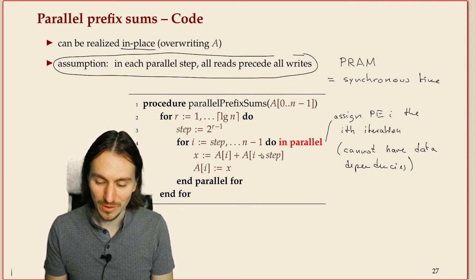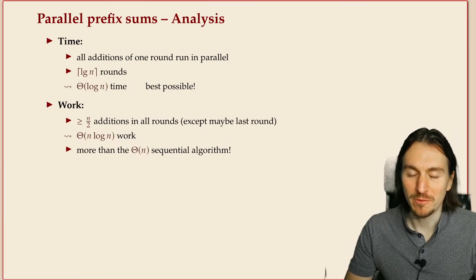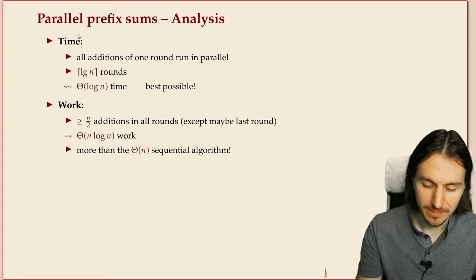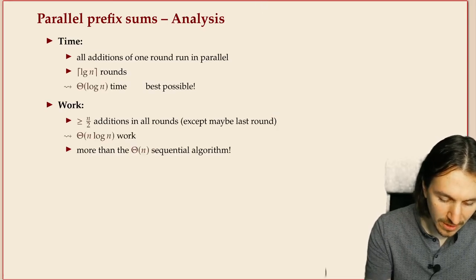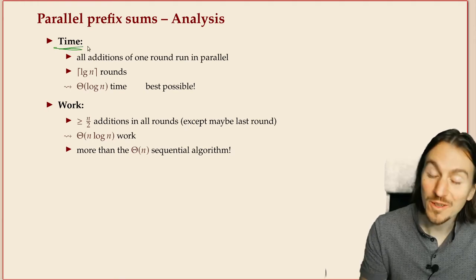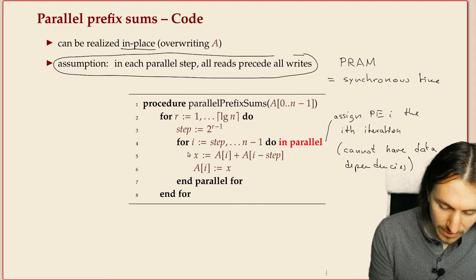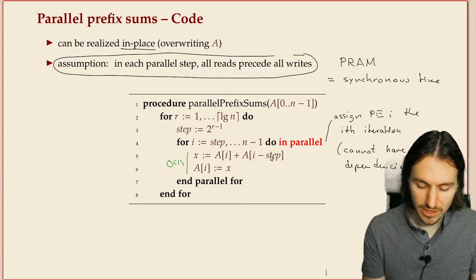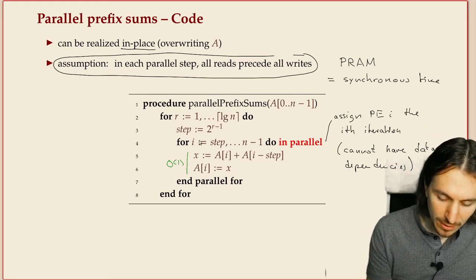We always get the old values when we read, and everyone gets the same old values, then in the next step we write them back — that's what's behind working on the PRAM. This is a very concise and nice way of writing parallel algorithms, just having loops that run in parallel, but it's also a little subtle because you have to be very careful not to create hidden data dependencies where you essentially rely on some execution being finished before another starts — that would compute a wrong result.